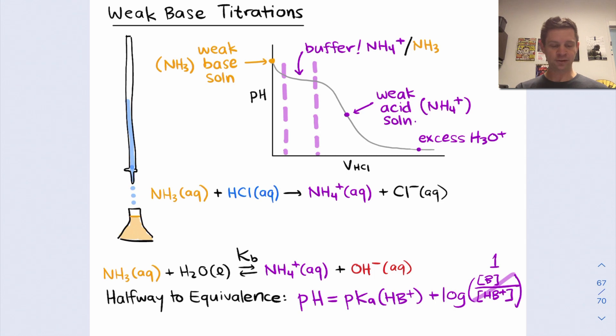So the pH at that point, at halfway to equivalence, is equal to pKa for the conjugate acid HB+. And if, for example, we were interested in pKb for the base, pKb for NH3, we could use the conjugate seesaw to calculate that. The idea that 14 minus the pKa is going to equal pKb for the conjugate base, assuming we're at 25 degrees Celsius and pKw is equal to 14.